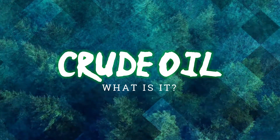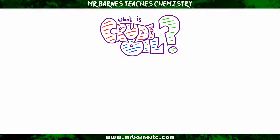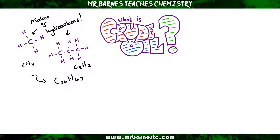Welcome to this video on crude oil, where we're going to be looking at what crude oil is and what it's used for. Nice and simply, crude oil is a mixture of hydrocarbons — made up of hydrogen and carbon only. There are lots of different types of these hydrocarbons, going from short chain ones up to large chained molecules, which again only contain carbon and hydrogen.